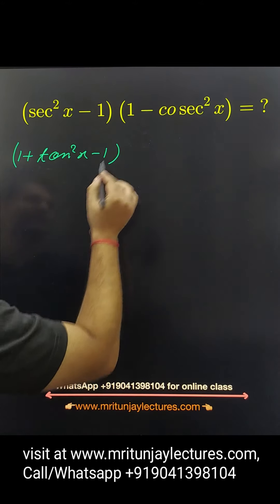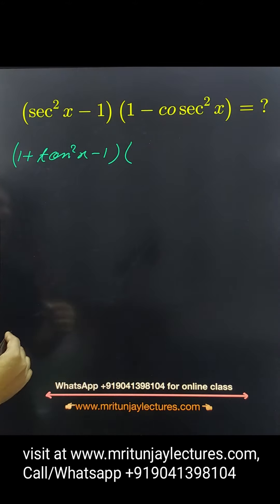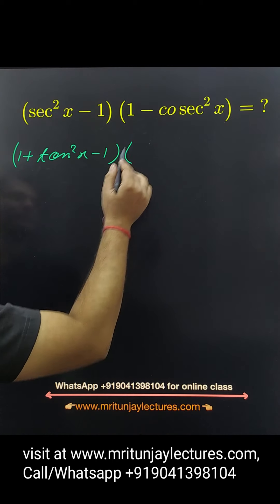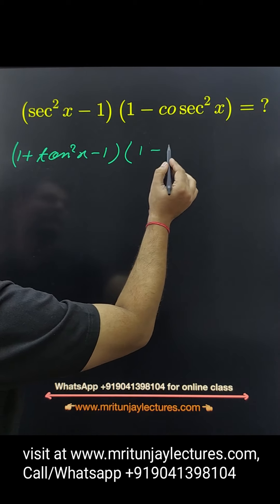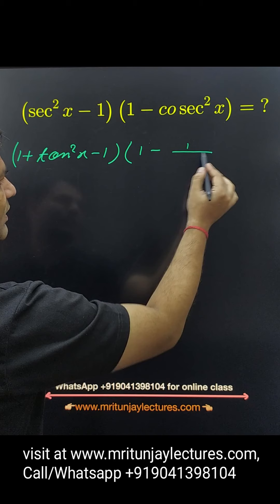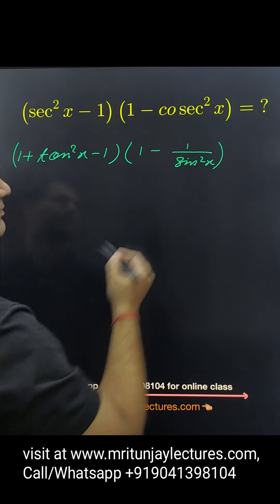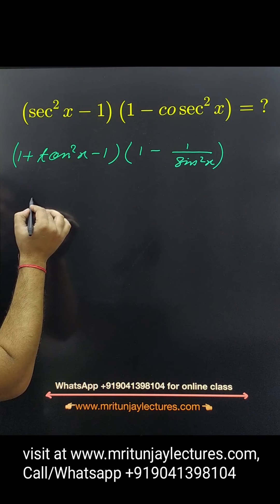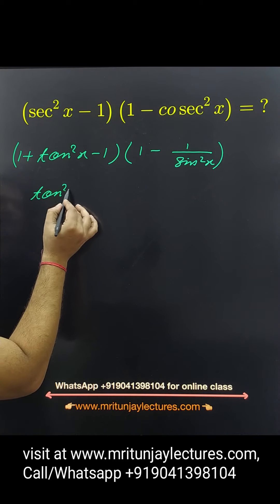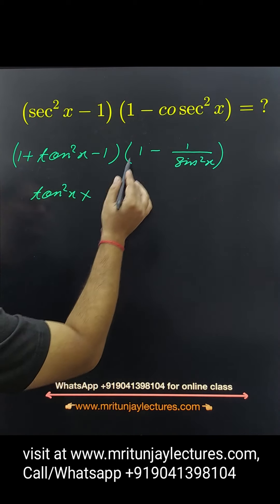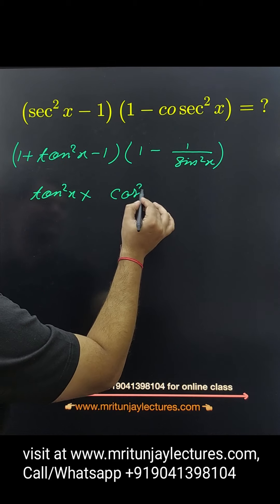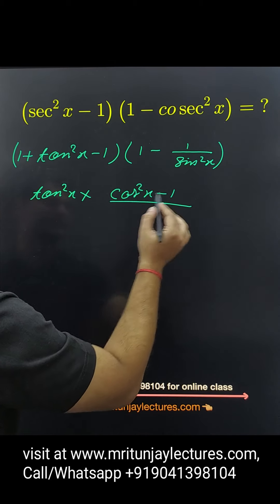Now after that I know that what about that value, simply here if any doubt then written 1 by sin square x. So basically this one is tan square x into here cos square x minus 1, take LCM.